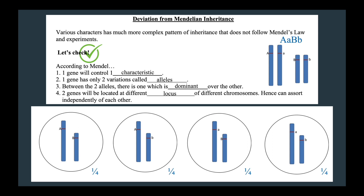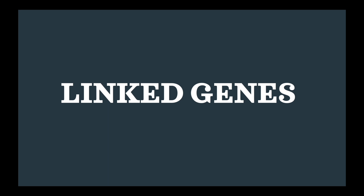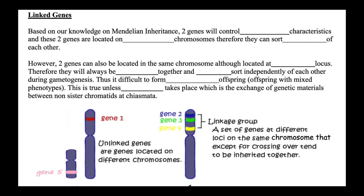Now having been reminded of that, let's learn about linked genes. Based on our knowledge of Mendelian inheritance, since one gene controls one characteristic, two genes will control two different characteristics, and these two genes are located on two different chromosomes, so they can assort independently of each other. For example, gene 1 and gene 5 are unlinked genes since they are located on different chromosomes.